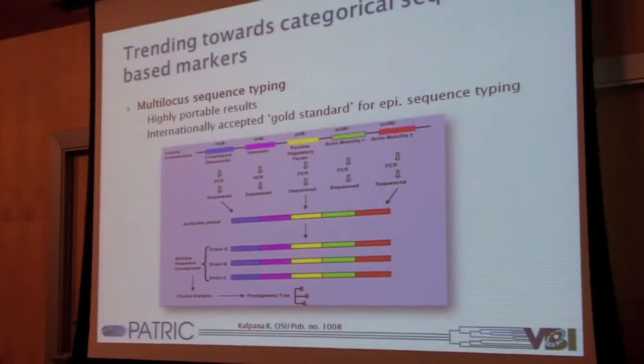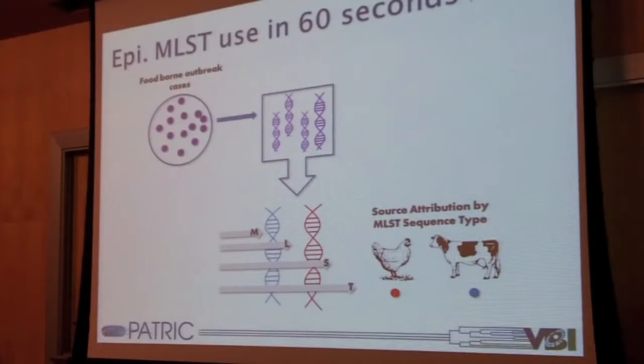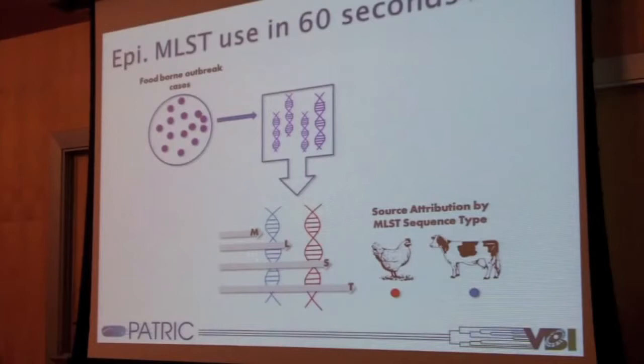One of the ways MLST gets used in epidemiological studies and outbreak investigations specifically is for pathogen source attribution. Say I've got a whole bunch of cases of Campylobacter related to contaminated foodstuffs and I want to know exactly what foods those are. I round up my cases, extract pathogen DNA, run MLST on everything, and it turns out a certain portion of my cases can be attributed to the MLST subtype of Campylobacter that likes to hang out in chicken, and another portion to one associated with cows.